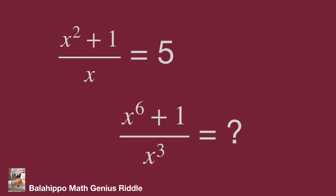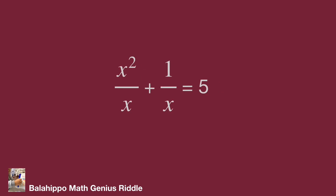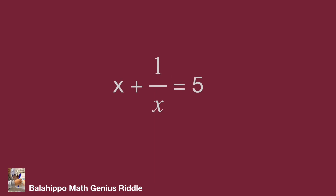The question is to find the value of x to the power 6 plus 1 over x cubed, from the given equation x squared plus 1 over x equals 5. This should have some connection between them. At first, let's start from the given equation. The fraction x squared plus 1 over x develops as x squared over x plus 1 over x, which simplifies to x plus 1 over x equals 5.